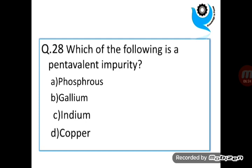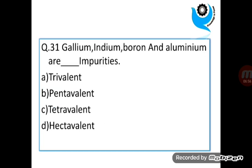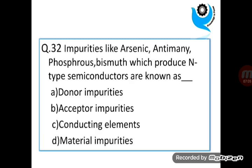Question 28. Which of the following is a pentavalent impurity? Phosphorus. Question 29. For formation of P-type semiconductor, dash types of atoms are added to silicon and germanium. Answer is Trivalent. Question 30. For formation of N-type semiconductor, dash types of atoms are added to silicon and germanium. Answer is pentavalent. Question 31. Gallium, indium, boron, aluminum are dash impurities. Answer is Trivalent.